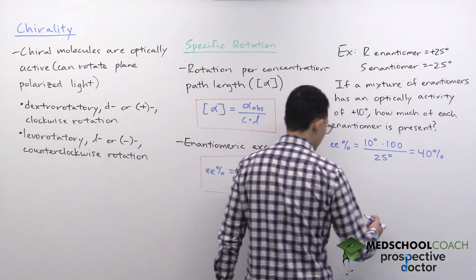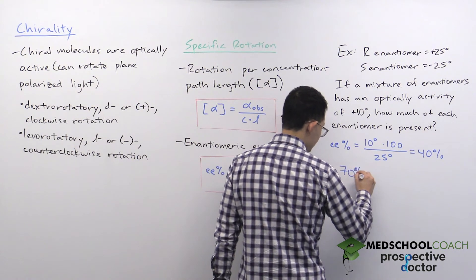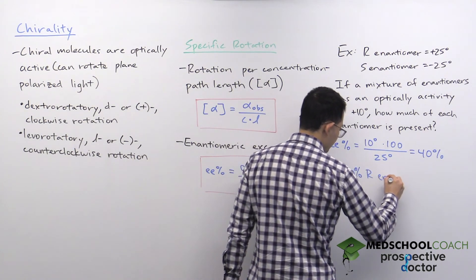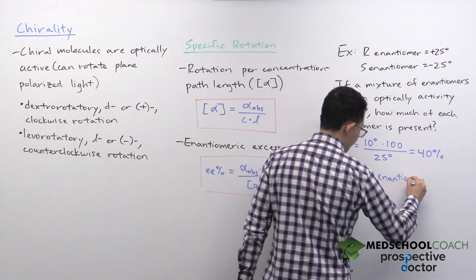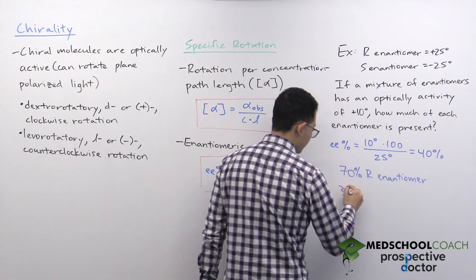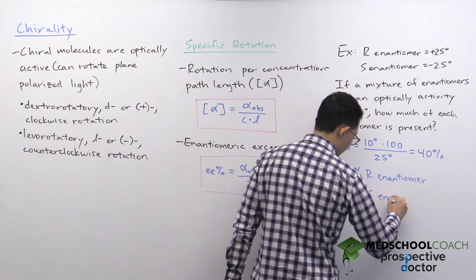And in total, it would mean that you have 70 percent of the R enantiomer and 30 percent of the S enantiomer.